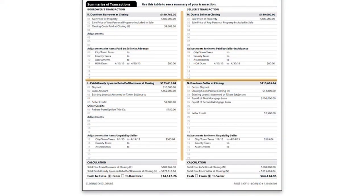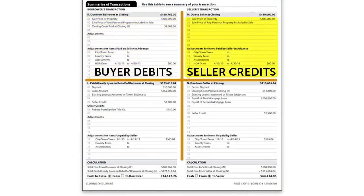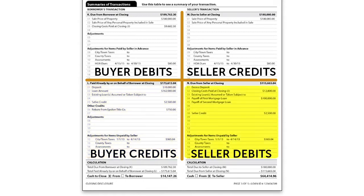The bottom two-thirds of page 3 contains the summaries of the transaction for both buyer and seller. This area is formatted with Section K as debits from the buyer and Section M as credits to the seller. Section L contains credits to the buyer and Section N shows seller debits.